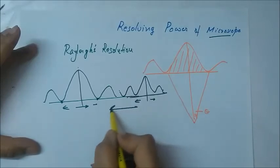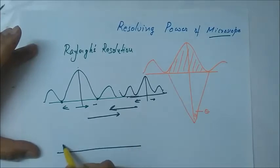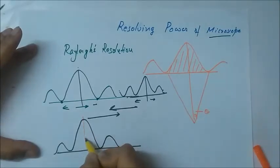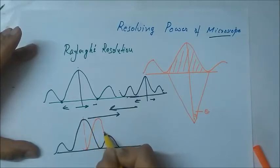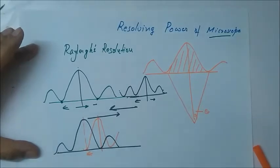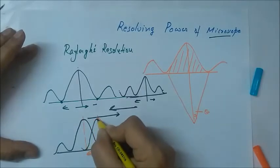But when they come closer, to what extent can they come closer so that we can resolve them? The criteria is that the central maxima of one should fall on the first minima of the other for resolution. It should not come closer than this. This is the minimum closeness which we can permit.